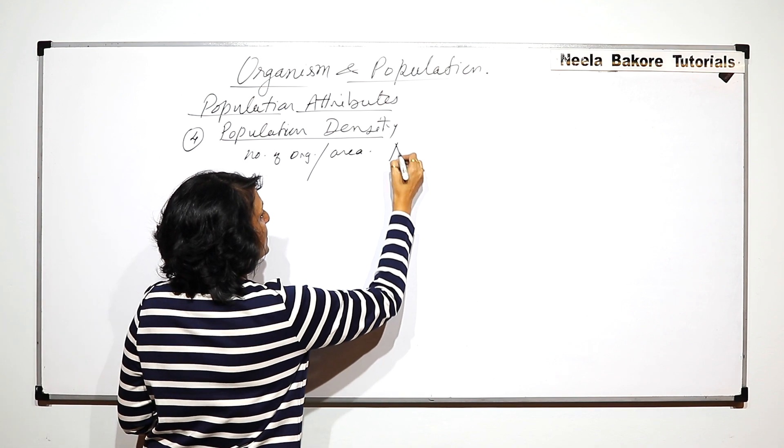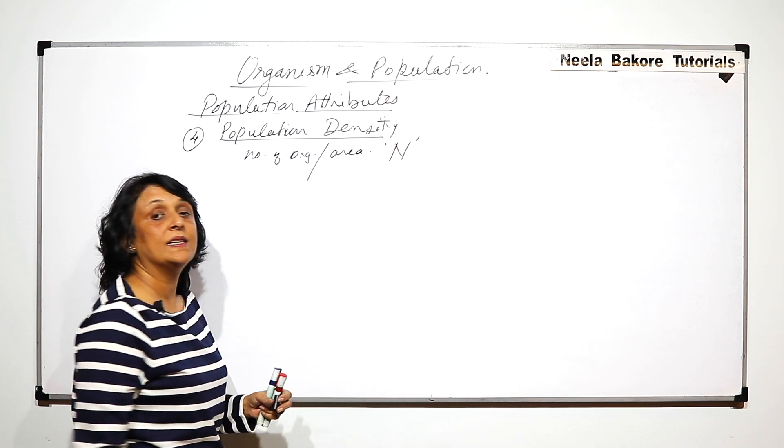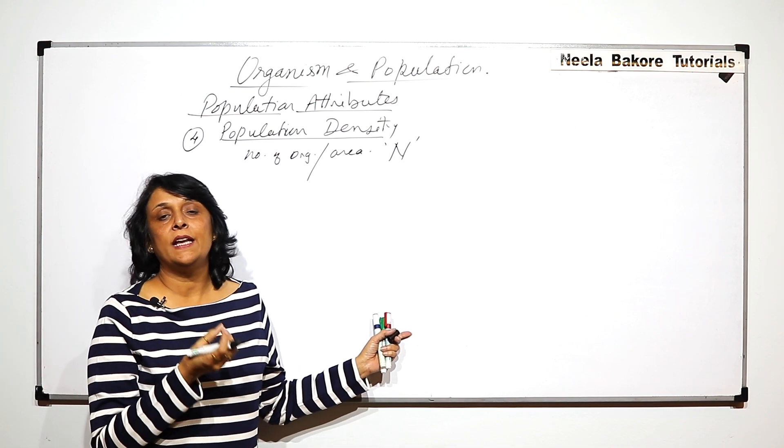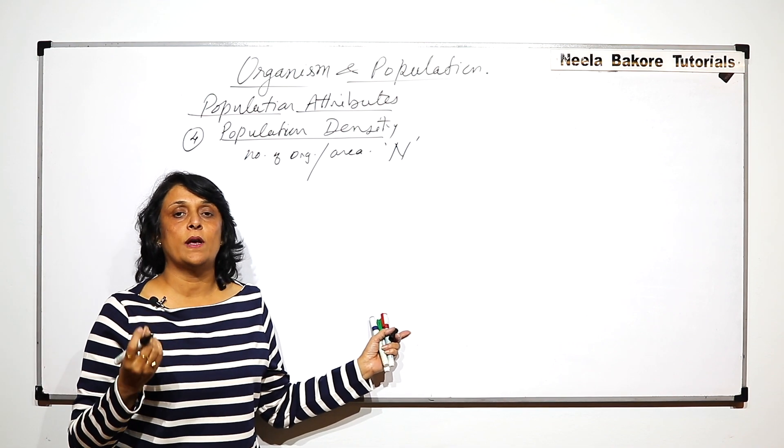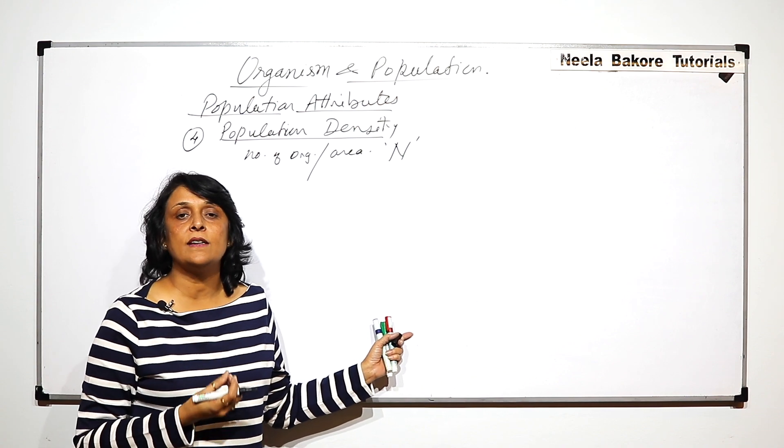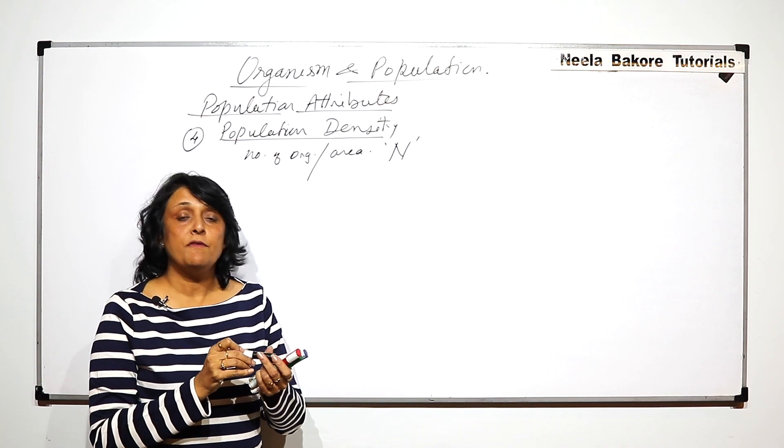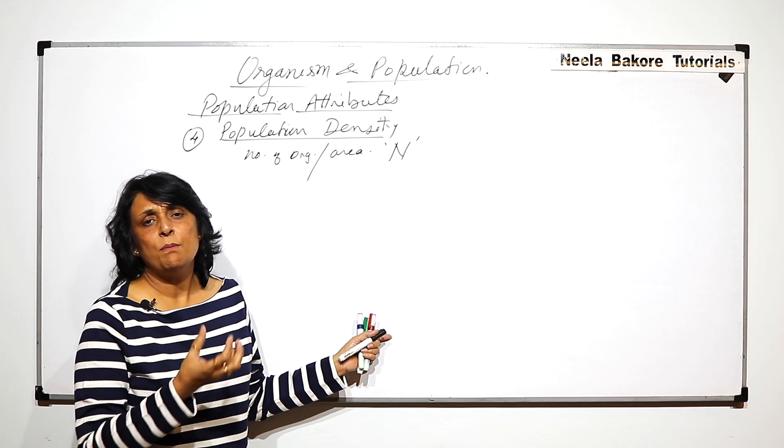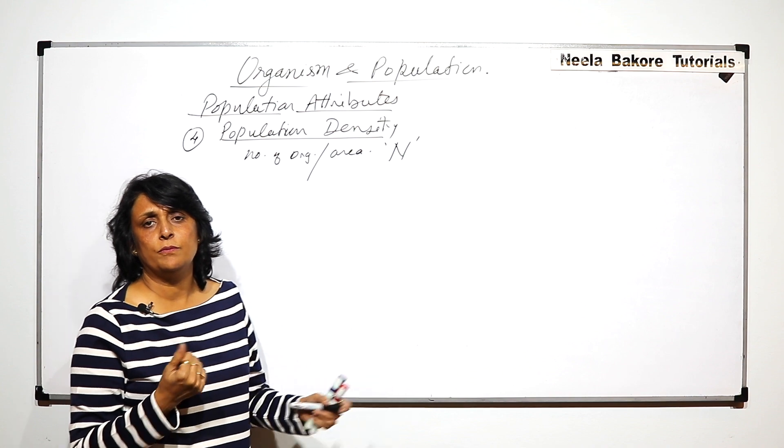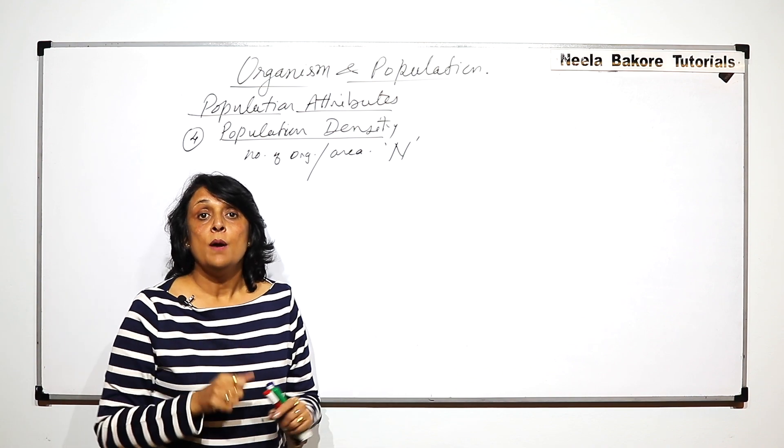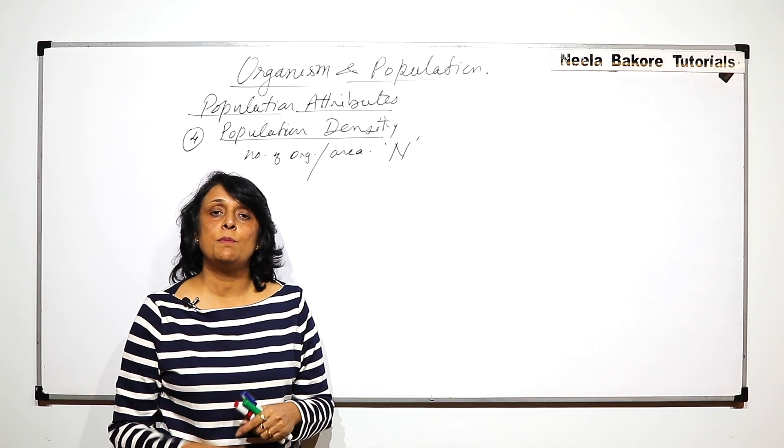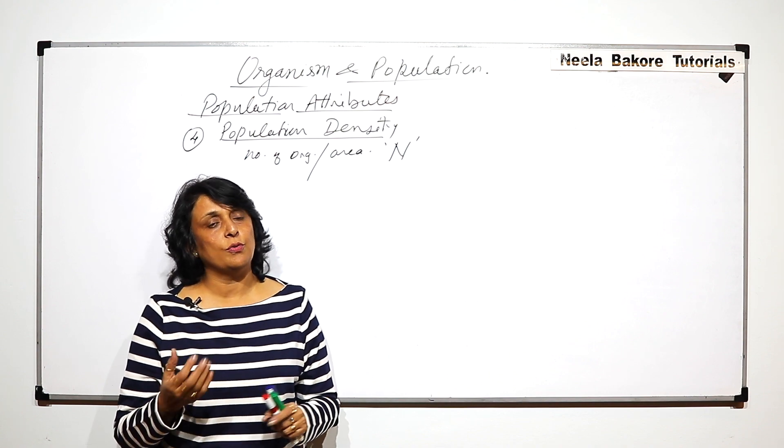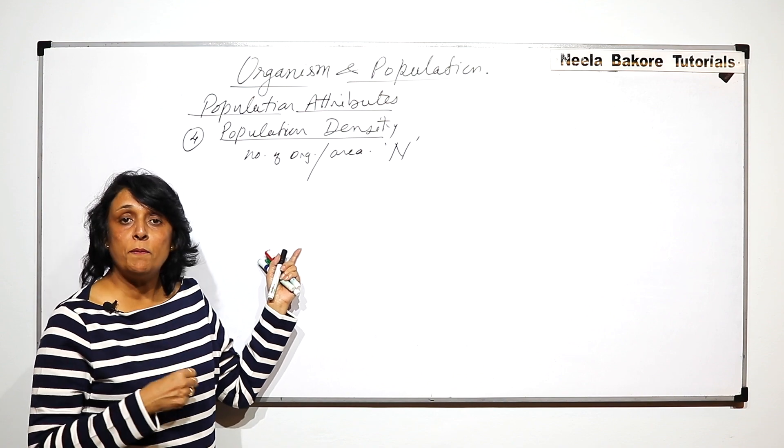Population density is represented by capital N in a given area per unit area, which can be per square meter or per square kilometer depending upon which organism we want to study. If you are talking about a very tiny organism in a laboratory condition, then the unit area would be smaller. But if we are talking about humans, maybe we will use kilometer per square kilometer area.